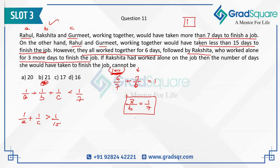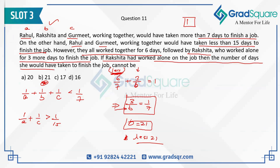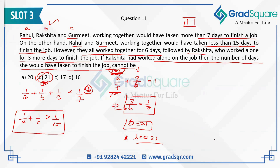Since 3/B must be greater than 1/7, the value of B must be less than 21. So if Rakshata had worked alone on the job, the number of days she would have taken cannot be 21. If B were 21, then the six-day combined work would equal exactly 6/7, which contradicts the strict inequality given. Therefore B must be less than 21, and the answer to the question is that 21 is not possible — option B, 21, is the answer for this question.